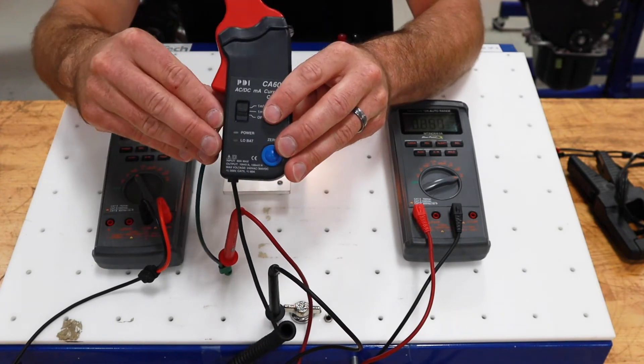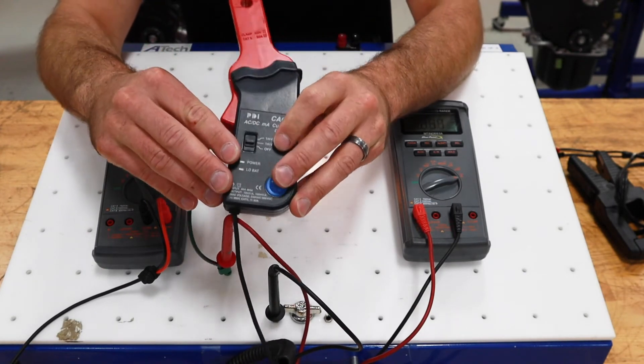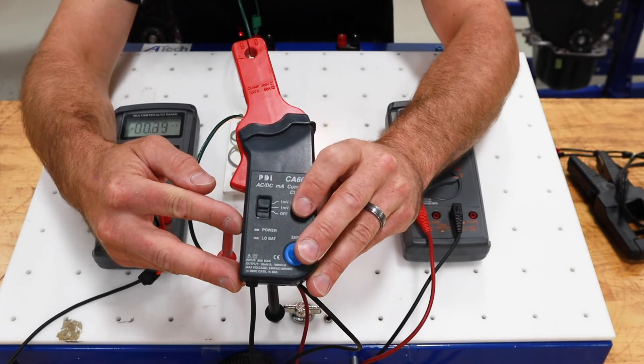First we've got to zero it, so I've got to turn it on. We're going to select the lower scale because we know that we're not working with a lot of current. I've got to press the zero button until I get close to zero.